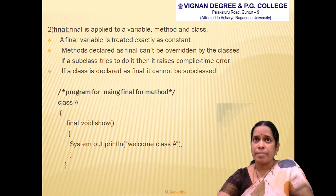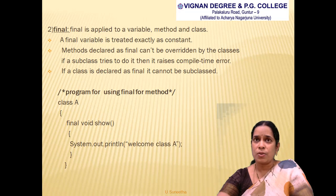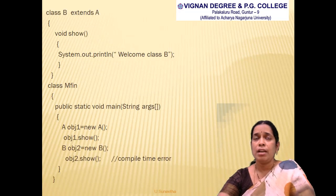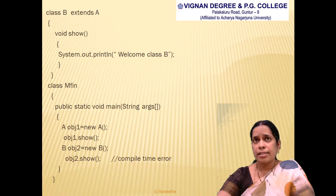Here is an example demonstrating a final method. The first class is class A, which has a method 'show' declared as final. Within its body, a print statement displays 'Welcome Class A'. Class A is then closed. The second class is class B extends A — inheriting all properties of A — and it has its own void method 'show' with a print statement.